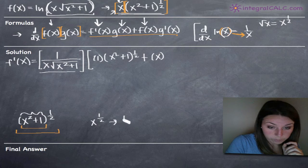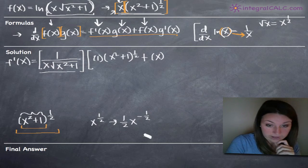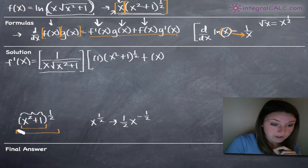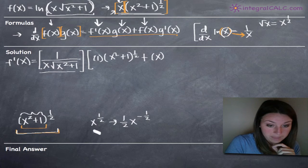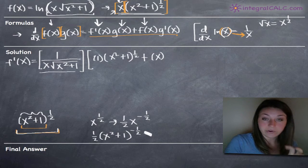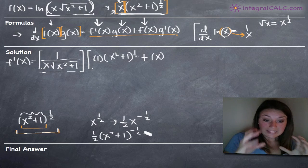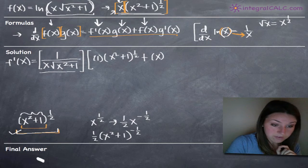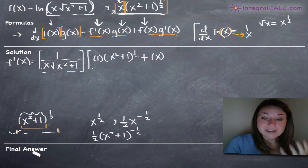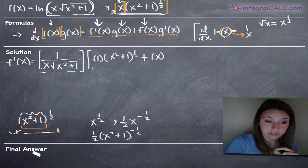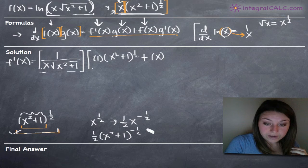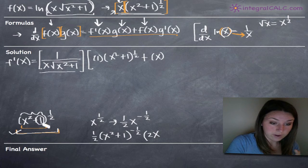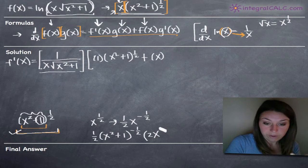Imagine replacing x squared plus 1 with just x: the derivative of x to the 1/2 would be 1/2 x to the negative 1/2. So the derivative of our outside function is 1/2 times x squared plus 1 to the negative 1/2. We've taken the derivative of the outside, leaving the inside alone. Now we multiply by the derivative of the inside: the derivative of x squared plus 1 is 2x, so we multiply by 2x.